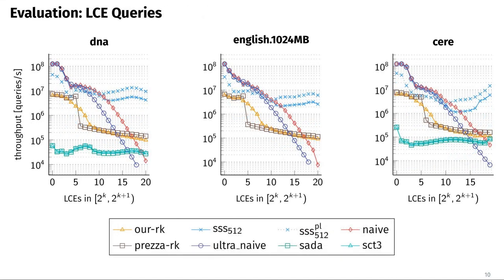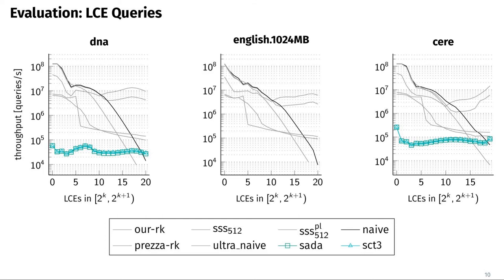As the final evaluation, we compare all algorithms and data structures that can answer LCE queries, with the same plot structure as before: query throughput versus LCE length. For the compressed suffix tree approaches, on DNA there are some throughput fluctuations but overall throughput is independent of LCE size. On Sere, short LCE queries are answered significantly faster but overall behavior is similar to DNA. We have no result for English as the compressed suffix tree could not be computed. Overall, compressed suffix tree throughput is significantly lower than all other tested approaches, though it supports additional query types such as pattern matching.